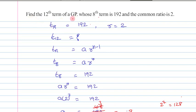Find the 12th term of a GP whose 8th term is 192 and common ratio is 2. Here we have given T8 equals 192 and common ratio r equals 2.